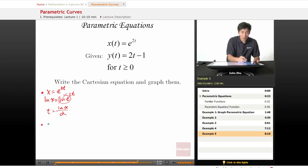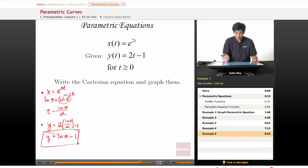And in our step 2, we are going to plug in this t for the t and y. So 2 times ln of x over 2 minus 1, which simplifies to ln of x minus 1. So here is the Cartesian equation and now we want to graph it.